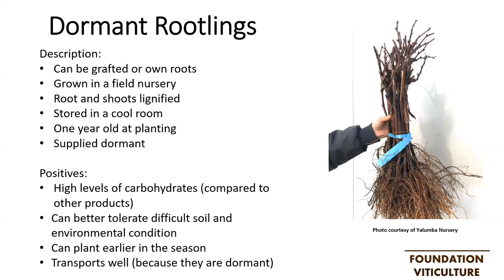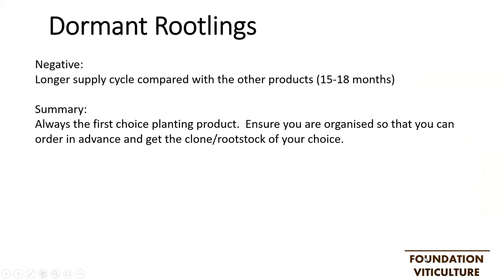The only negative of a dormant rootling is that there is a long lead time. To put that in perspective, you order in autumn year one — say autumn 2020 — the nursery will propagate those vines in spring 2020, the vines are grown in the field nursery across the summer and into autumn 2021, then lifted in winter 2021 and supplied sometime in spring 2021. So there's close to a 15 to 18 month supply cycle for this product, which means you really need to get in early. In summary, dormant rootlings should always be considered the first choice product, but you must order well in advance to secure your preferred variety, clone and rootstock combination.